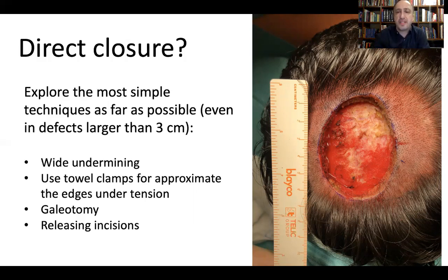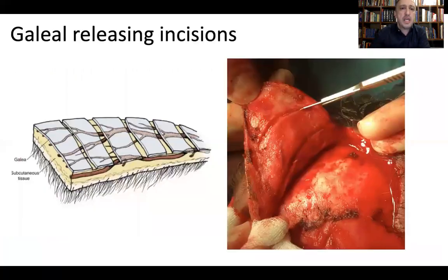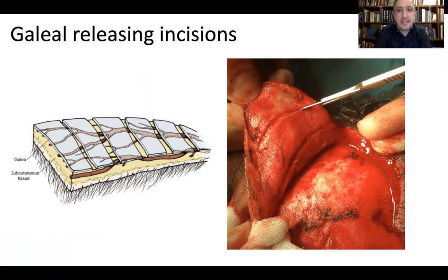This is a large defect of about four to five centimeters in diameter. After undermining, we can approximate the edges with a towel clamp, removing tension and allowing direct closure. Another approach is to perform incisions on the galea — these gallea releasing incisions are quite relevant because they remove the tightness of the galea. However, we must be careful: these cuts should not go too deep, as cutting too deep may damage vessels that run above the galea, resulting in bleeding and potentially ischemia of the wound edges.